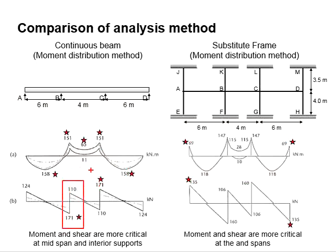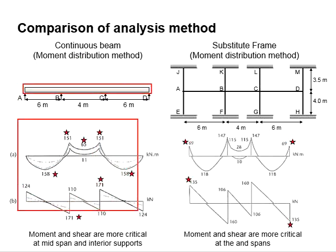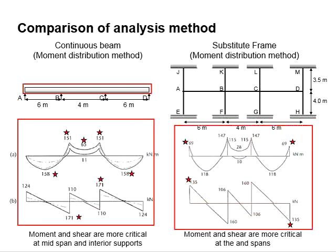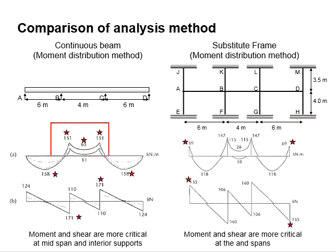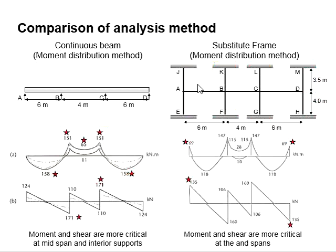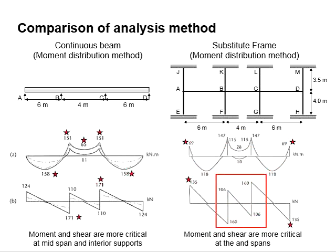The same applies to the shear force acting on the continuous beam. In other words, the design of a continuous beam based on this analysis is normally more conservative than the frame analysis. As for the frame analysis, the columns are assumed to take a certain degree of moment throughout the members, meaning some degree of moment is distributed into the columns, giving a slightly lower moment force acting within the beam — and the same goes for the shear force diagram.